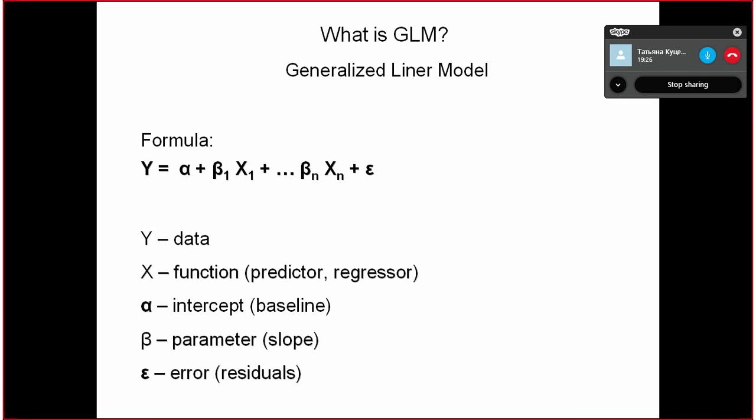Or you can see it as a correlation between X and Y. But why is this model so useful if you can just calculate the correlation? Because of this: there can be many different predictors and you estimate their contribution to Y at the same time.